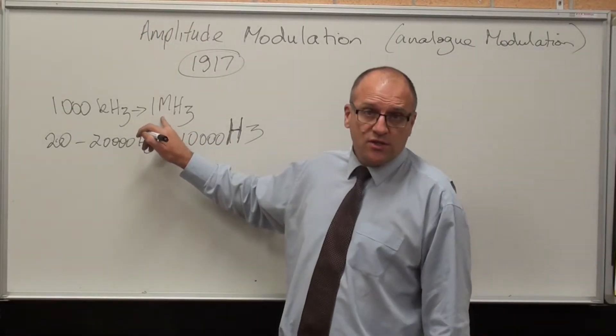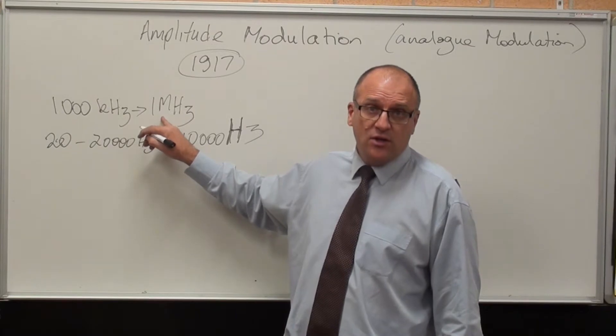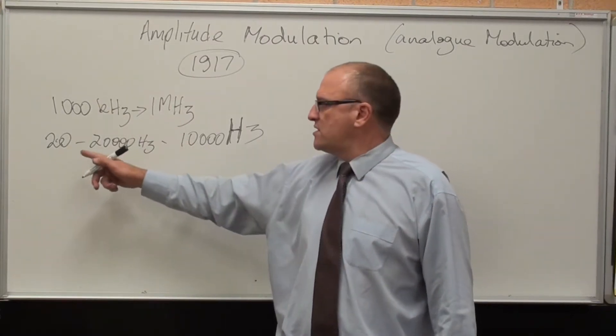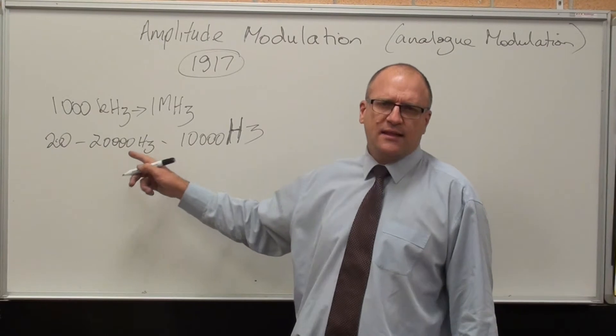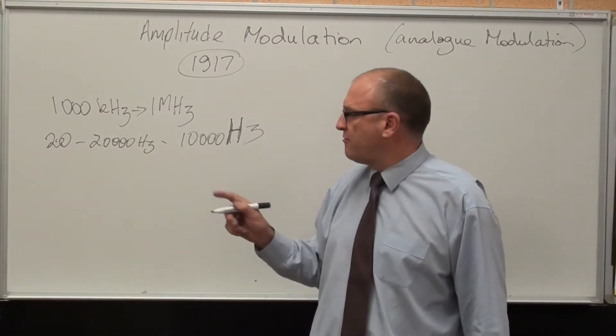AM radio works in Australia at around about 1 megahertz, 1,000 kilohertz. Voice goes from 20 to 20,000 hertz, the range of audible frequencies.